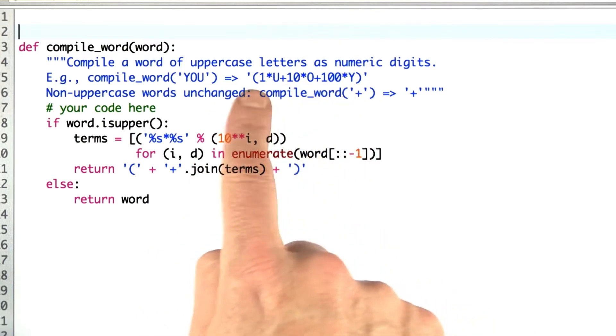It works out backwards from the normal y or u order, but that doesn't matter. I take those results, I put a plus sign in between them, and I wrap parentheses around them. If it's not upper, I just return the word itself.